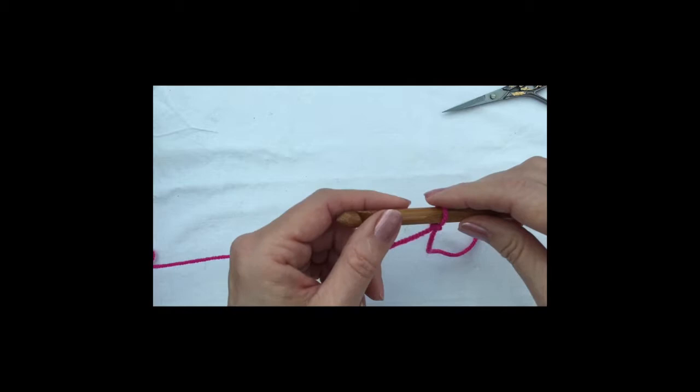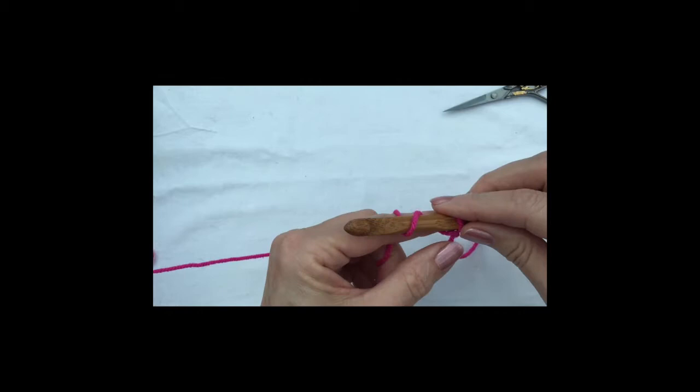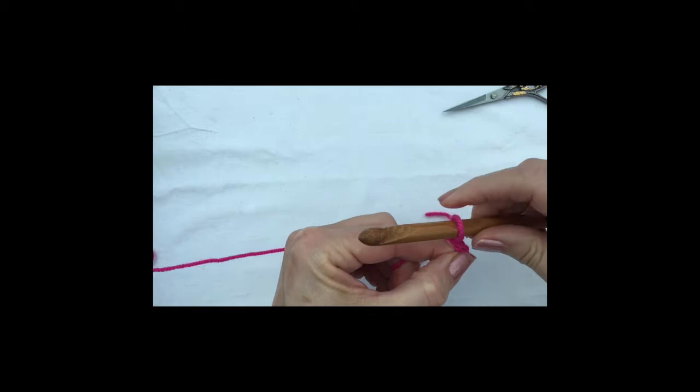So we're going to start off with the chain. Wrap the yarn around the hook, give it a bit of a wiggle and pull it through and that is your chain. Wrap it round, pull it through.